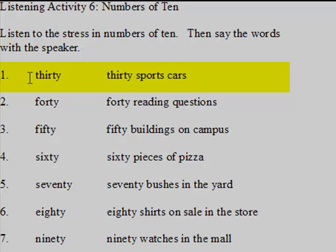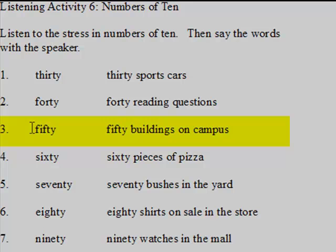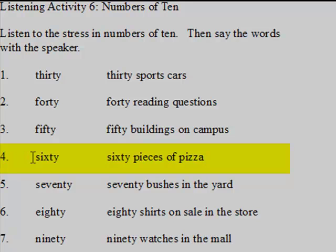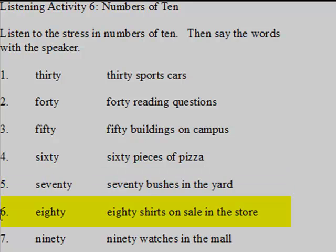1. 30 — 30 sports cars. 2. 40 — 40 reading questions. 3. 50 — 50 buildings on campus. 4. 60 — 60 pieces of pizza. 5. 70 — 70 bushes in the yard. 6. 80 — 80 shirts on sale in the store. 7. 90 — 90 watches in the mall.